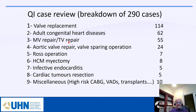This is a breakdown of the 290 cases — the most common are valve replacement, adult congenital disease, valve repair, and different types of surgery. The numbers shown don't represent our total volume; for example, only 55 valve repair cases were reviewed by me — we actually do about 100 mitral valve repairs per year at Toronto General Hospital.